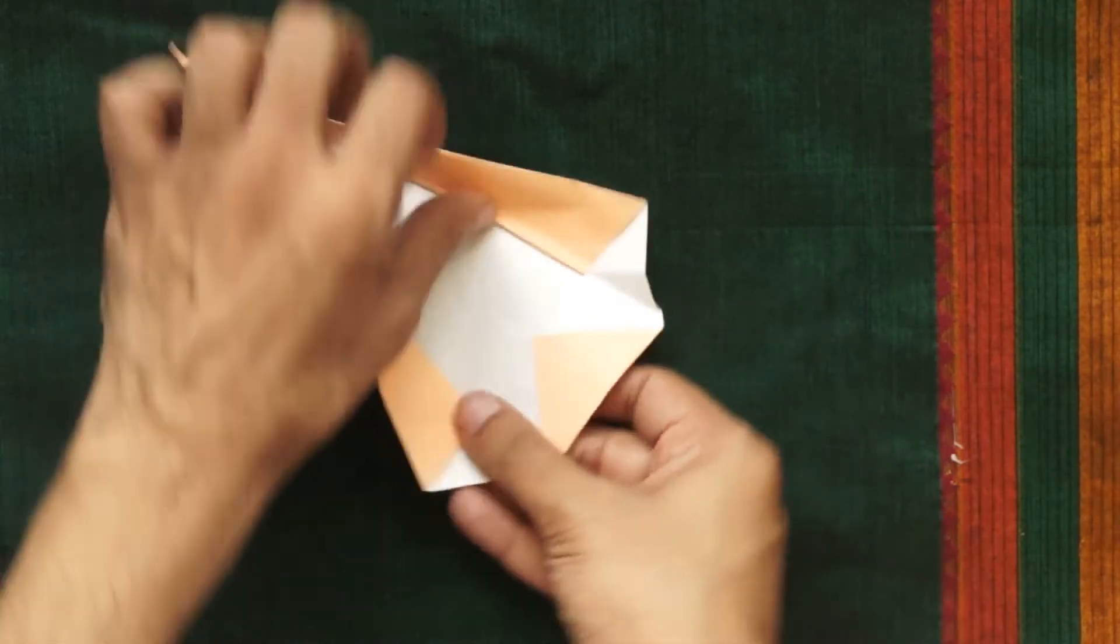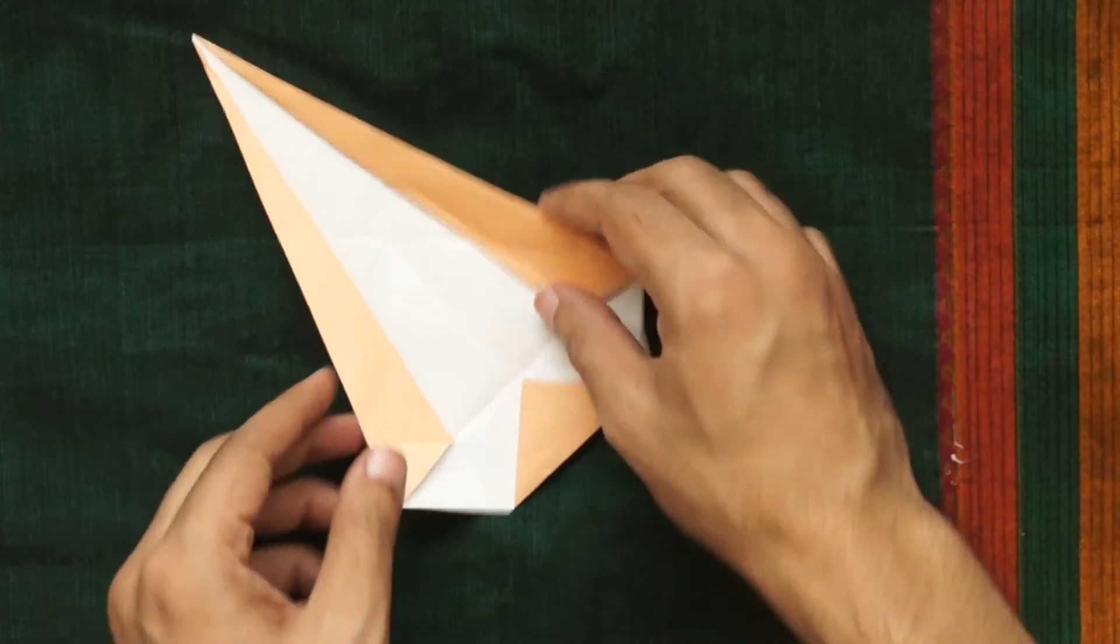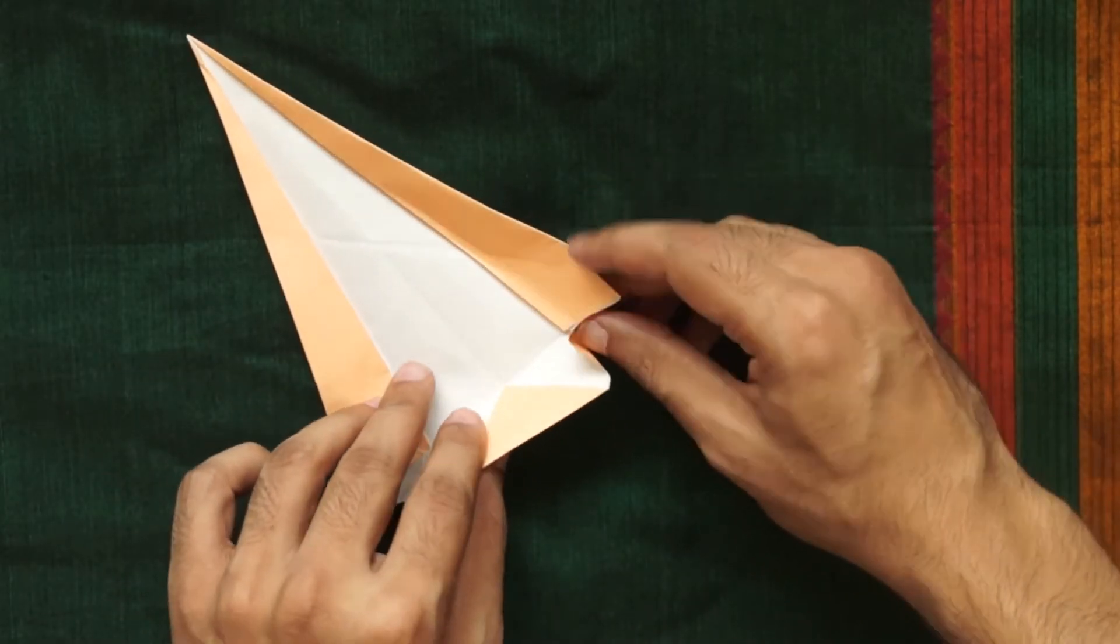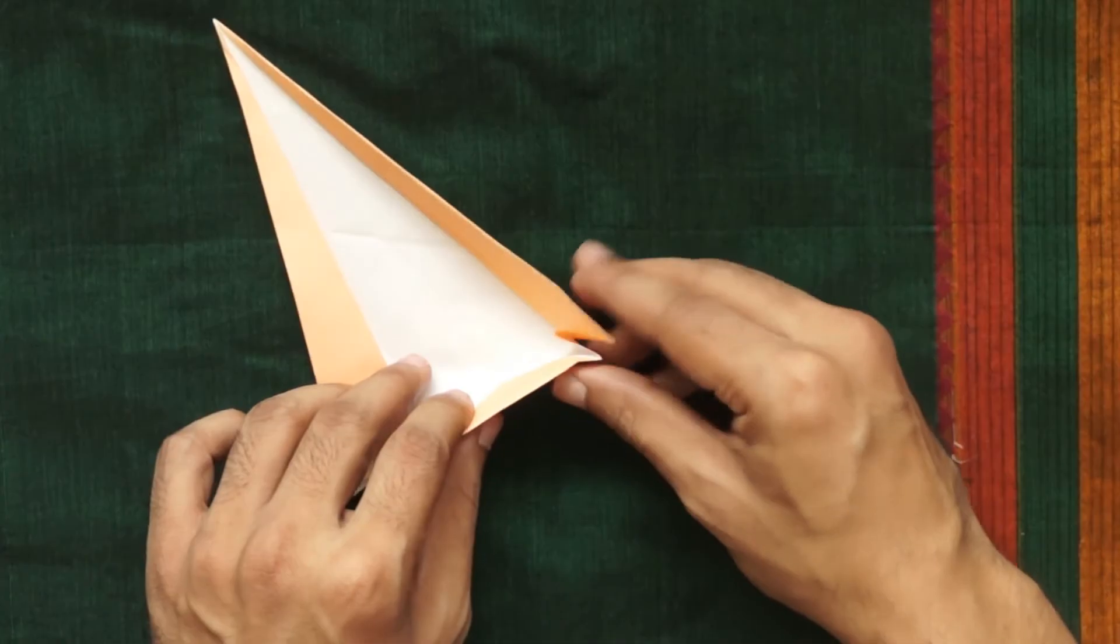These will form the side walls of your diya and the trapezoid shape will form the back wall. Connecting the two is this creased flap or loop of paper in the corner.